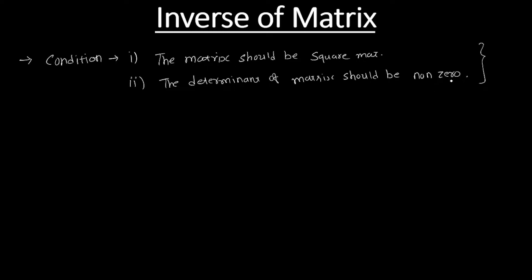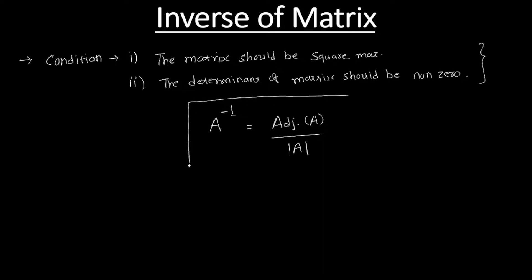If any matrix is fulfilling these two conditions, then only we can find the inverse of that matrix. The formula to find the inverse of any matrix A is: A inverse equals adjoint of A divided by determinant of A. You might understand why the determinant should not be zero — if the determinant is zero then the inverse will have infinite elements.